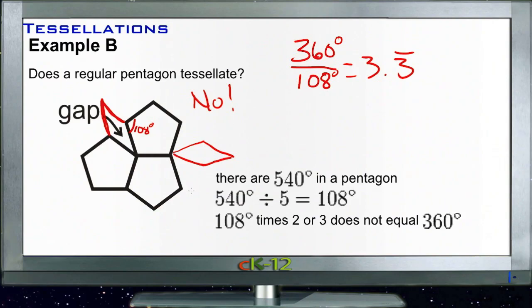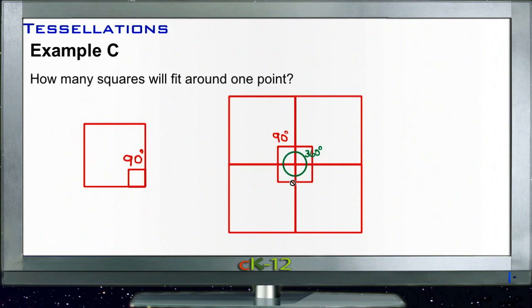Finally, for Example C: How many squares will fit around one point? This one's pretty easy. We need to get 360 degrees, and a square is 90 degrees on each corner—four right angles. So 360 divided by 90, that's four.